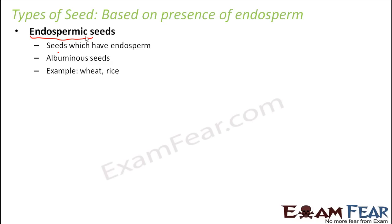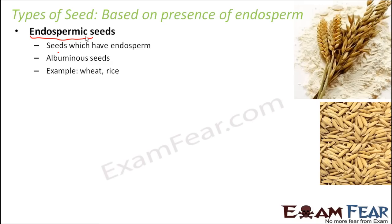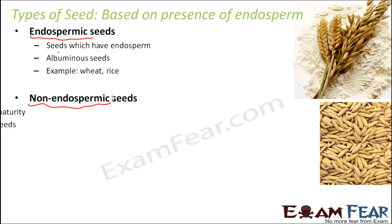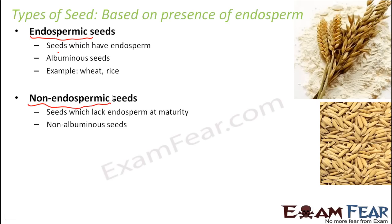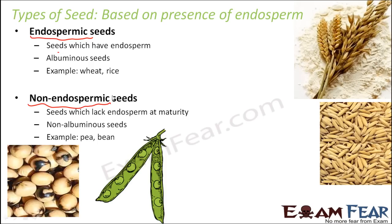Examples of endospermic seeds are wheat and rice — they still have the endosperm inside the seed, which you can see if you look at each grain. Non-endospermic seeds — also called non-albuminous seeds — lack endosperm, as the embryo has utilized all of it completely.